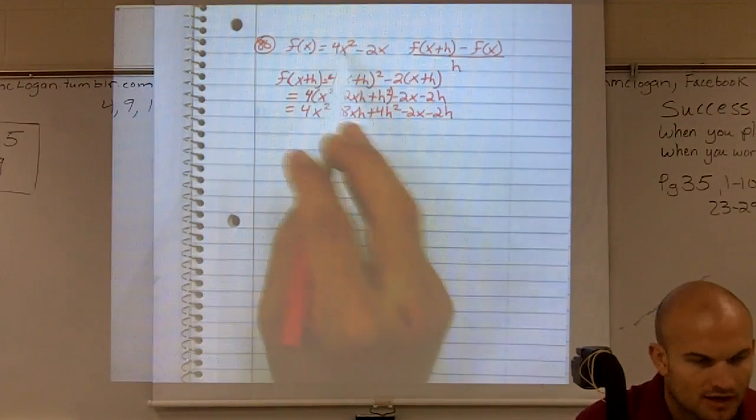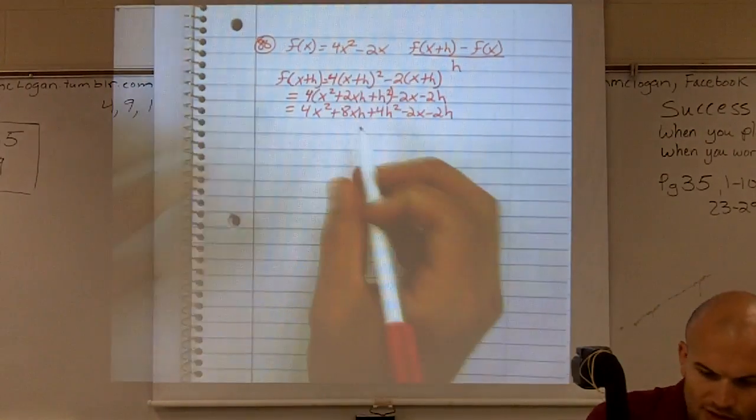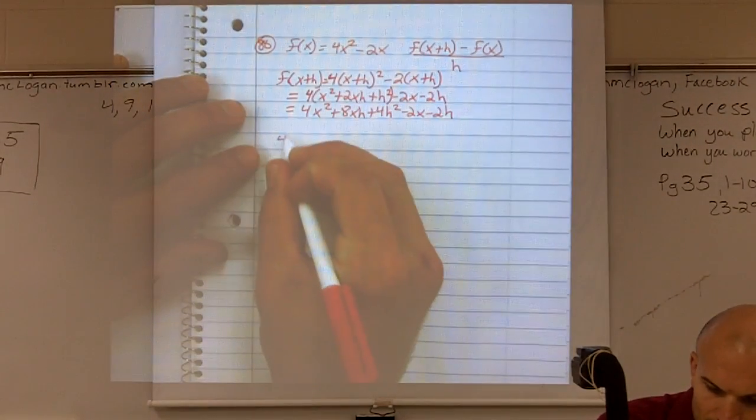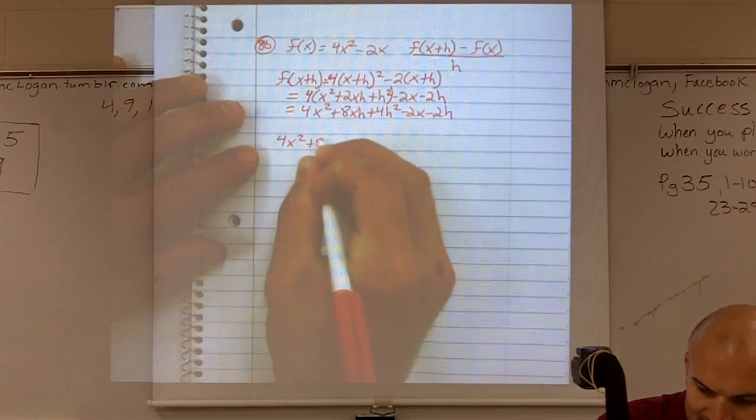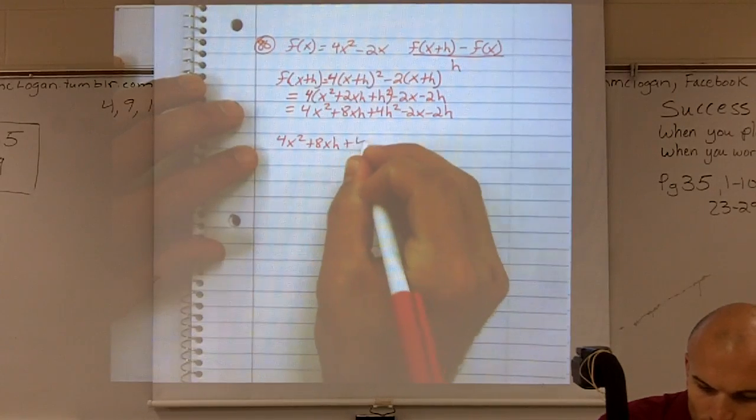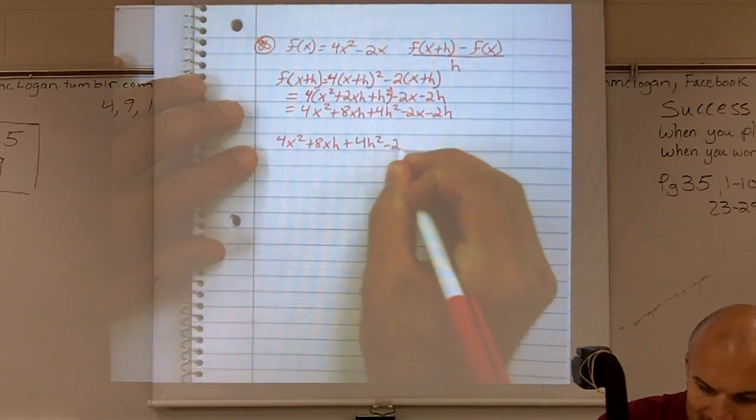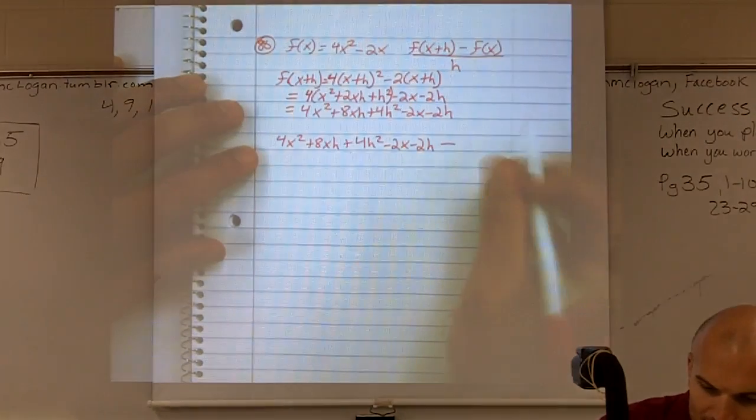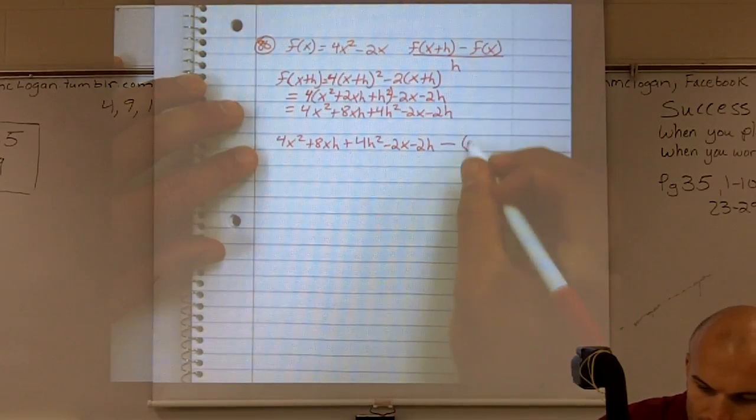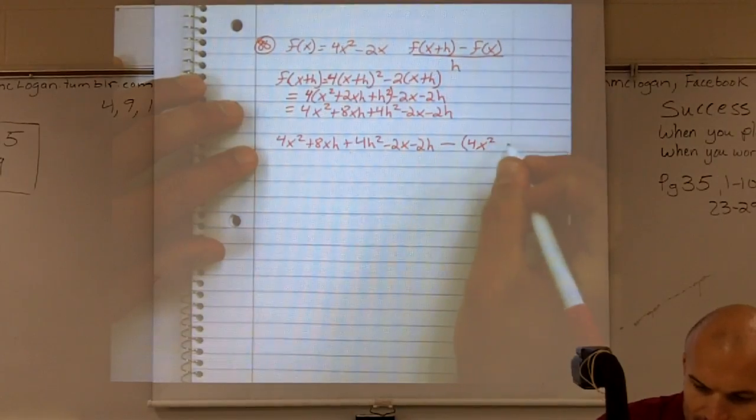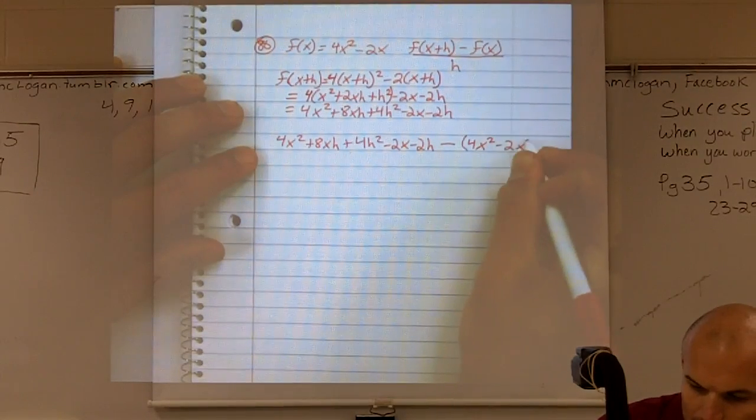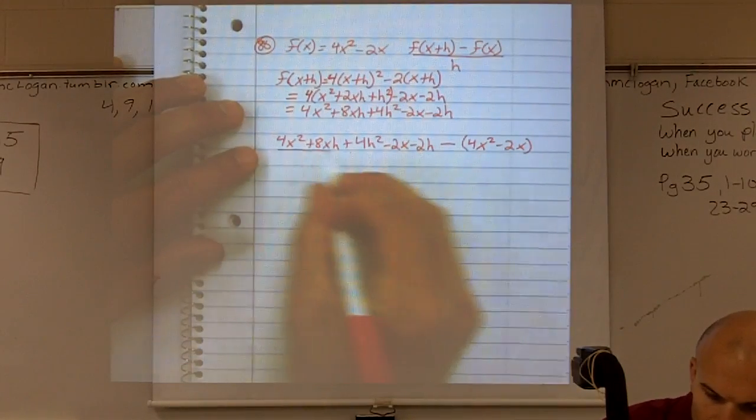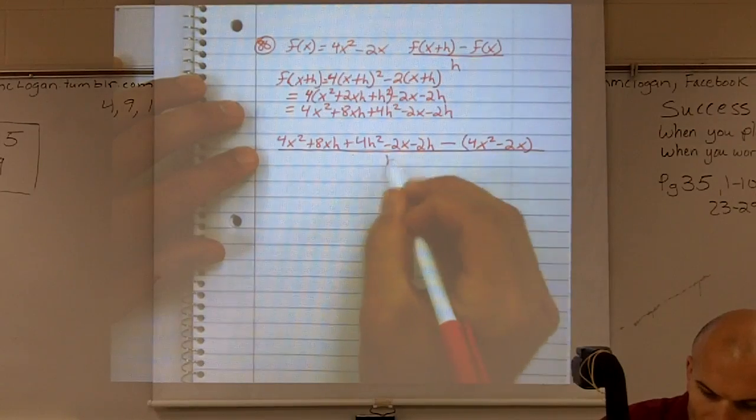Well, f of x is 4x squared minus 2x. So I'm just going to rewrite this and say 4x squared plus 8xh plus 4h squared minus 2x minus 2h minus 4x squared minus 2x. All that over h.